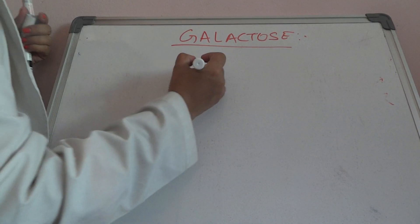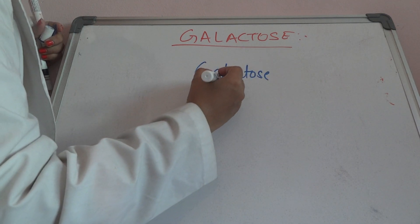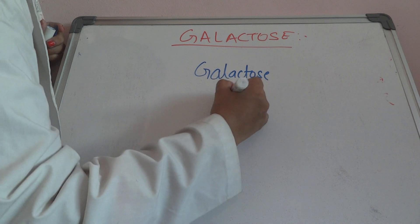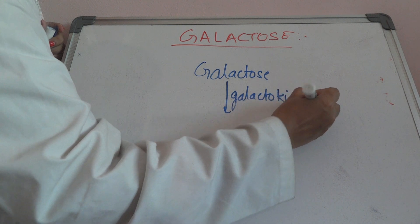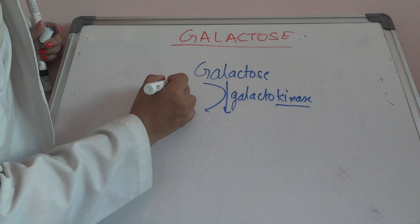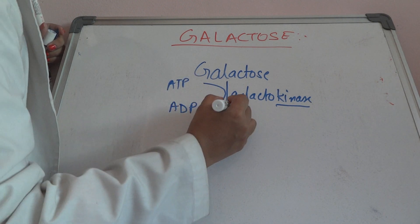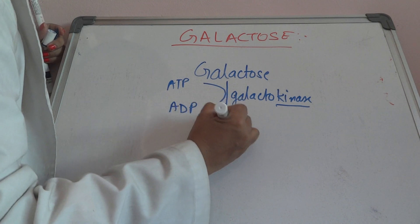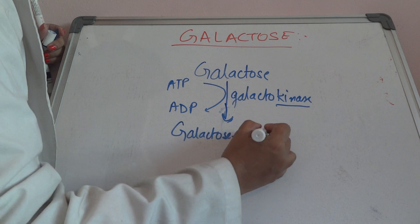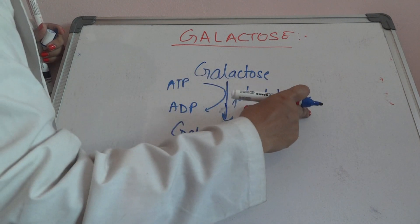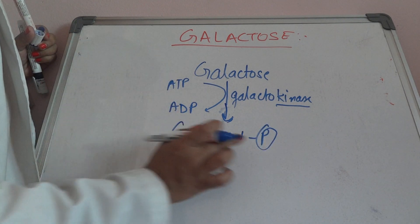Now coming to the metabolism of galactose. Galactose will undergo phosphorylation in the presence of the enzyme galactokinase. Whenever there is a kinase, ATP is taken and broken down to ADP, and phosphorylation takes place. So the product is galactose-1-phosphate.